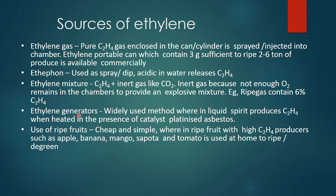Ethylene generator: a widely used method where liquid spirit produces ethylene when heated in the presence of a catalyst, platinized asbestos. Use of ripe fruits: a cheap and simple method wherein ripe fruits with high ethylene production, such as apple, banana, mango, sapota and tomato, are used at home to ripen or de-green other fruits.